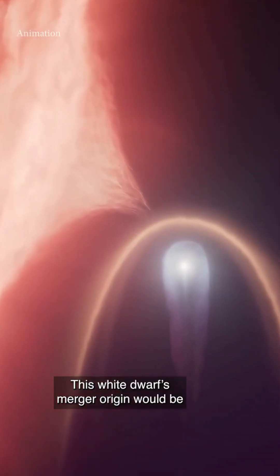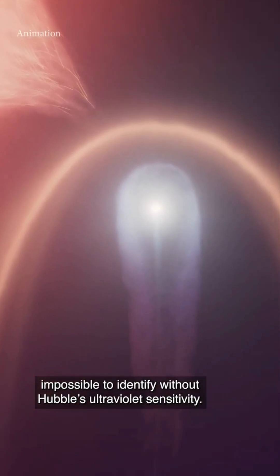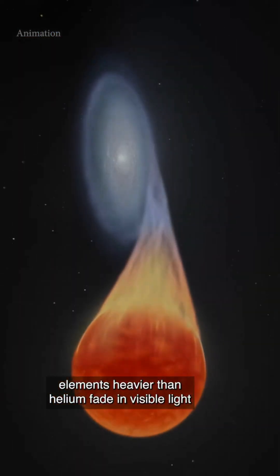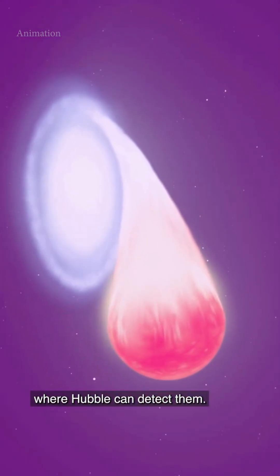This allows astronomers to detect carbon on the white dwarf's surface. This white dwarf's merger origin would be impossible to identify without Hubble's ultraviolet sensitivity. In hotter white dwarfs, spectral lines from elements heavier than helium fade in visible light, but stay bright in ultraviolet, where Hubble can detect them.